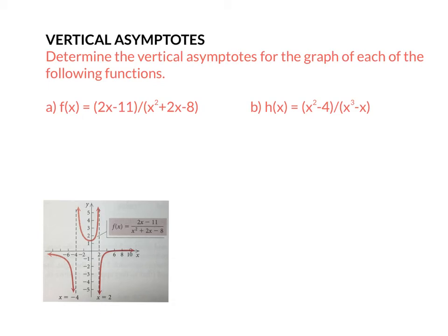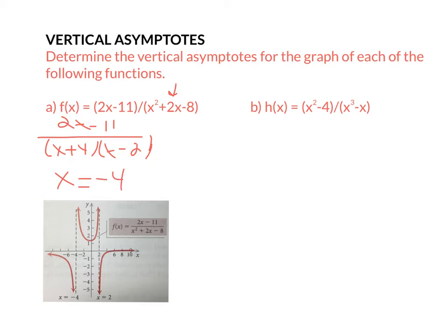Vertical asymptotes are very much like your domain. You can find the vertical asymptotes by whatever makes your denominator equal zero. So this first one I'm going to rewrite — it's two x minus 11 over, and I'm going to factor that denominator, making it x plus four times x minus two. Your domain would be all reals except for negative four and positive two, like we did in the last section. Well, that's also your vertical asymptote. Because they're vertical, it's going to be x equals negative four and also x equals two. Those are your vertical asymptotes.